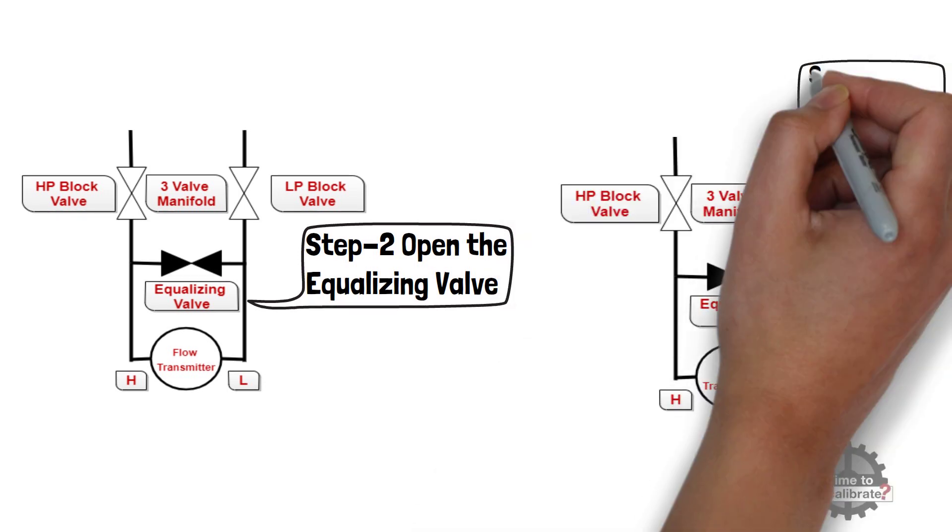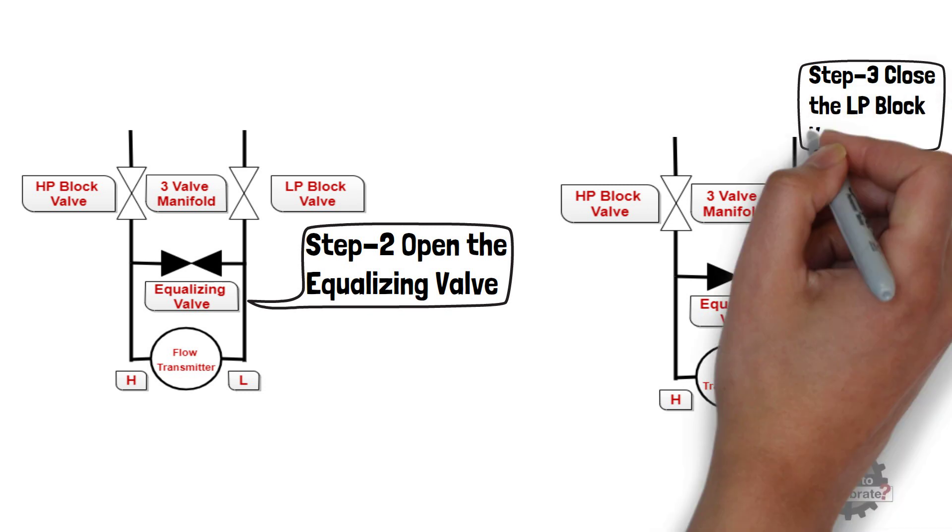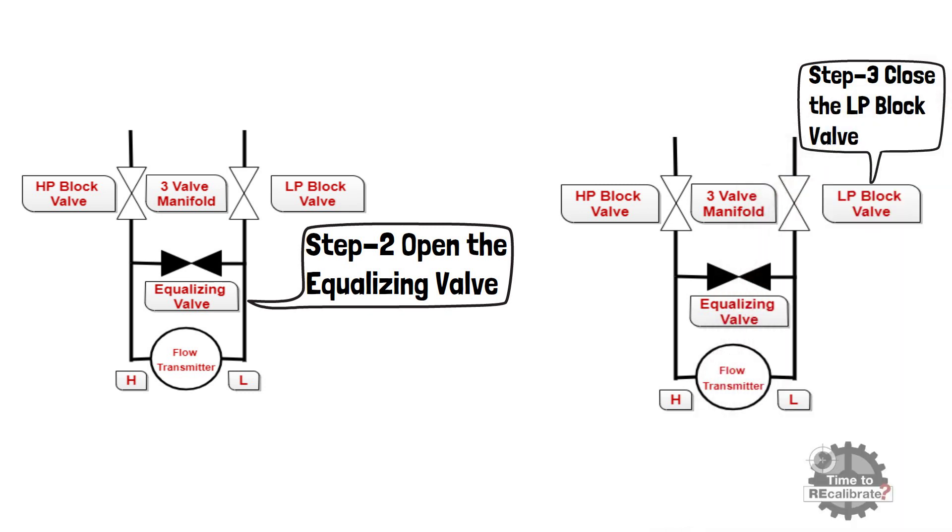In third step, close the LP block valve by rotating valve in clockwise direction. This will isolate the transmitter from the low side pressure.